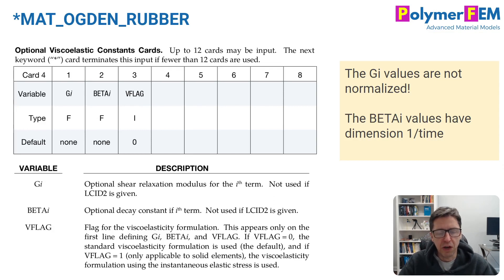Similar to the Ogden model itself as shear moduli, you need to give the moduli for relaxation functions here, not the normalized ones that are often done in other finite element programs. So what I want to do is demonstrate how we can use this and work with this in mCalibration.